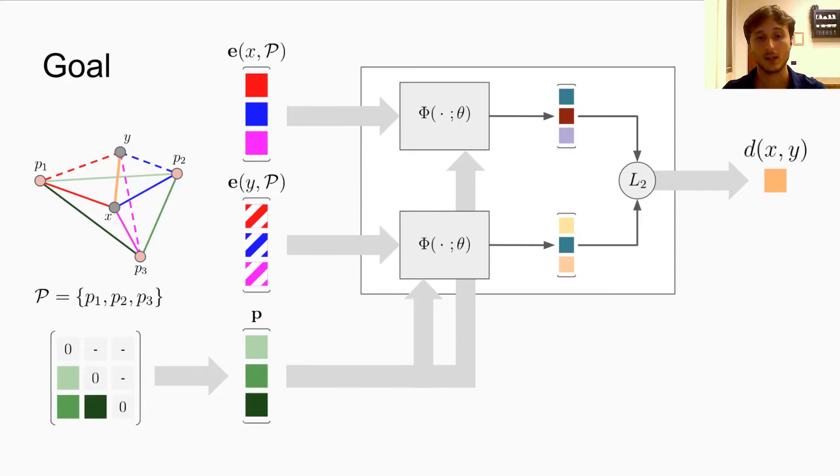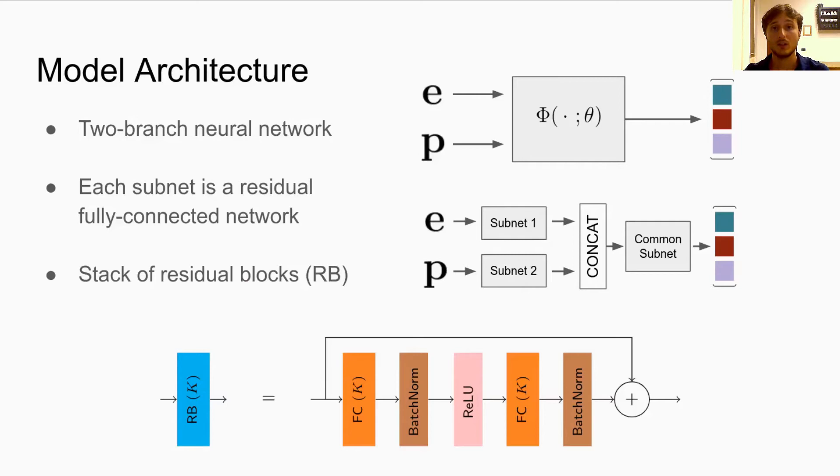Thus, our goal is to learn these Euclidean embeddings starting from the pivoted embeddings. The parametric model phi takes as input the pivoted embedding E of a metric object and the distance matrix P between pivots and produces the desired Euclidean embedding.